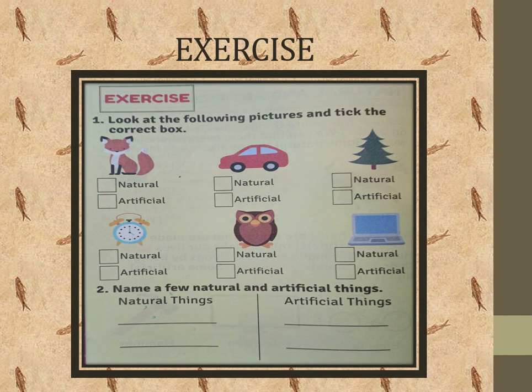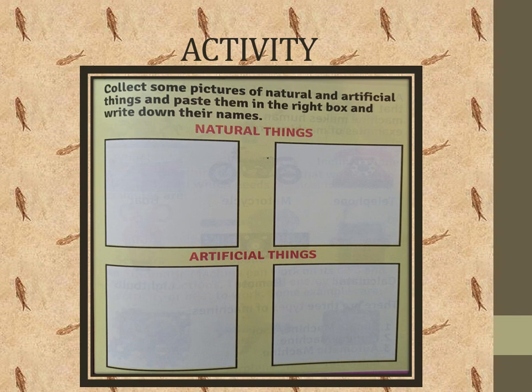The next one is: name a few natural and artificial things. You have to find out natural and artificial things and write the names. In the next page, you can see this activity — you have to collect some pictures of natural and artificial things and paste them in the right box and write down their names. If you have nothing to paste, you can also draw it. This is your home task: both the exercise on page number 47 and the activity on page number 48.